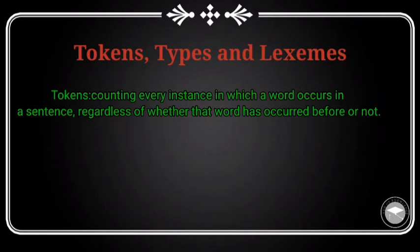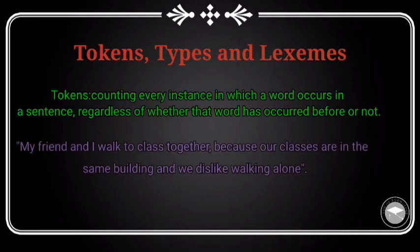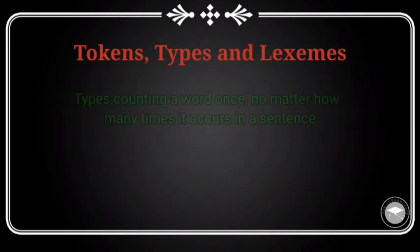Word tokens هو من اللي تحسب عدد الكلمات اللي عندك في الجملة وخايكونوا معاودين — إنتك تحسبش حالة من الكلمة الصافية. For example, if we count the words in the sentence: 'My friend and I walk to class together because our classes are in the same building and we dislike walking alone,' we get 21 words — that is 21 tokens.